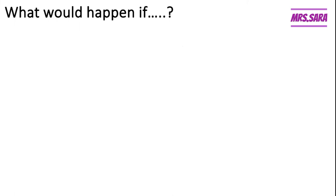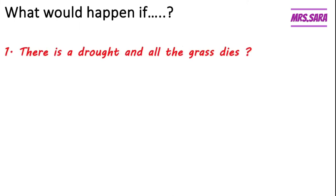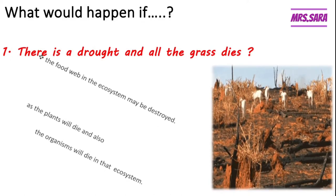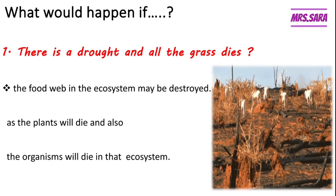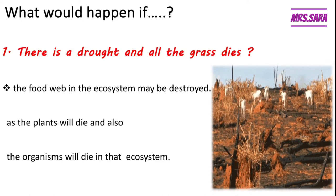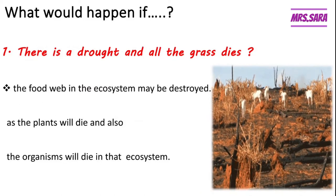What would happen if there is a drought and all the grass dies? The food web in the ecosystem may be destroyed as the plants will die and also the organisms will die in that ecosystem. A drought means there is no water. When there is no water, plants wouldn't grow. So other animals that feed on plants will die as they can't find their food source.